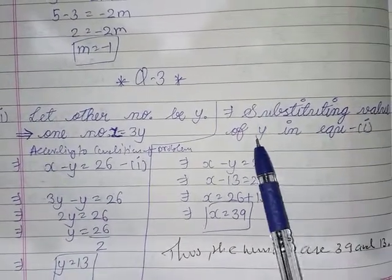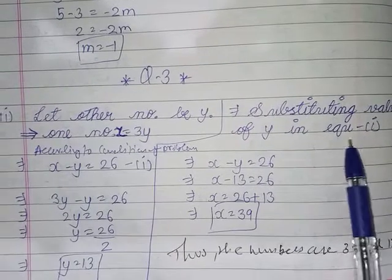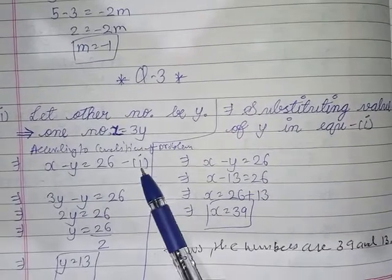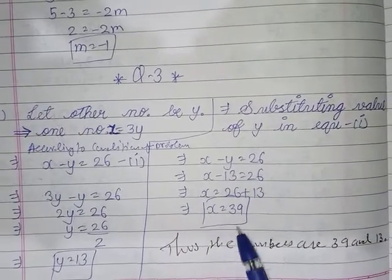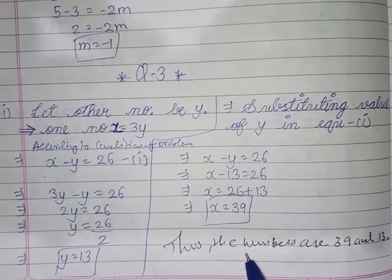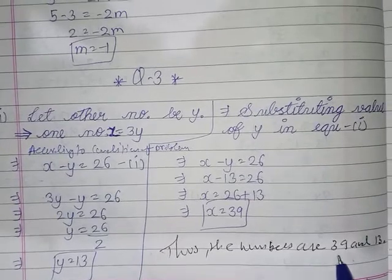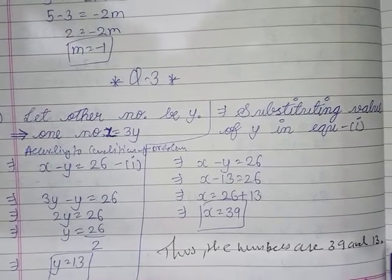Substituting the value of y in equation 1, you will get x equals 39. Thus the numbers are 39 and 13.